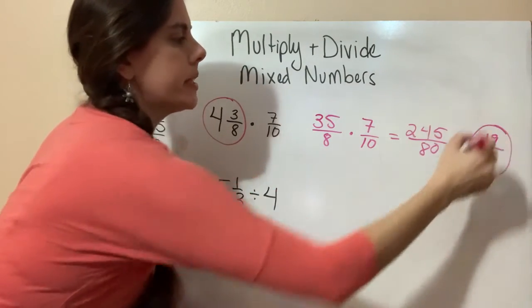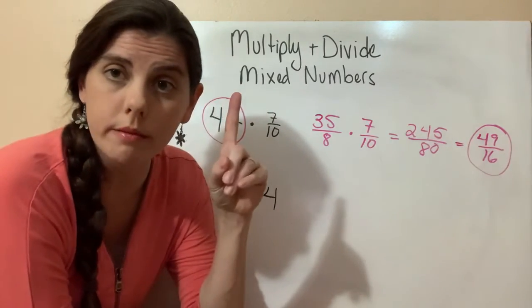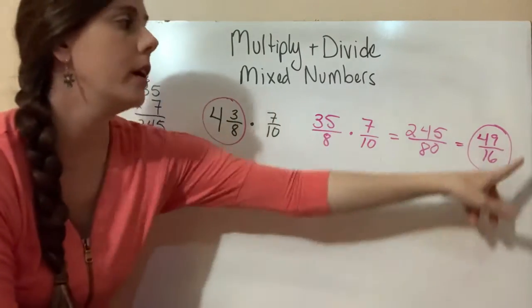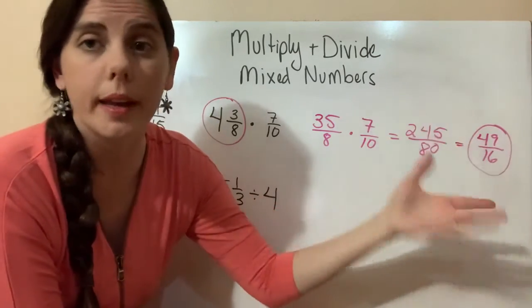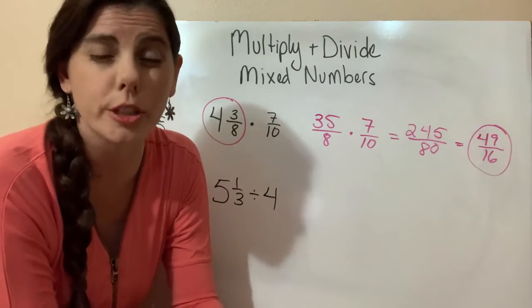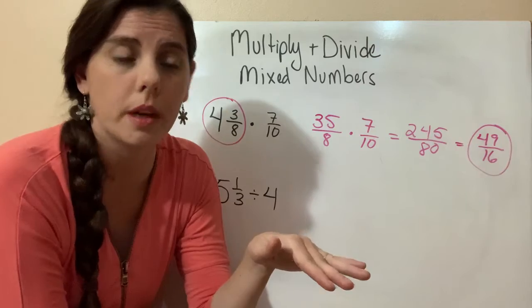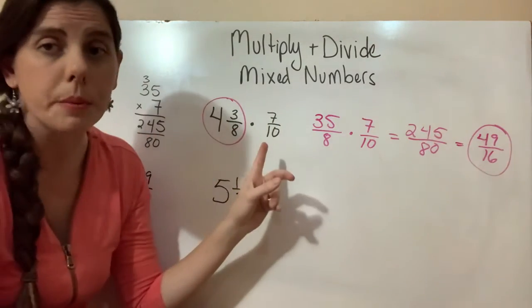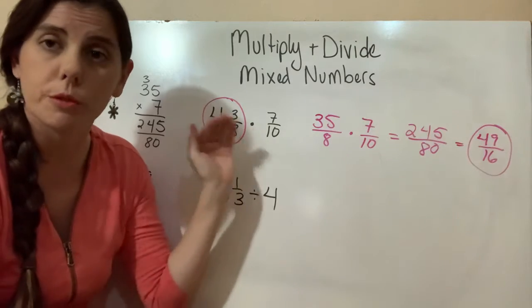And it gave me 49/16. 49 and 16 do not have any common factors except for 1. That's the only common factor they have, so we would leave our answer in this format. We don't have to turn it into a mixed number. Just leave your answers as improper fractions as long as they've been reduced and they're in lowest terms. When multiplying a mixed number, turn that mixed number into an improper fraction before you multiply.